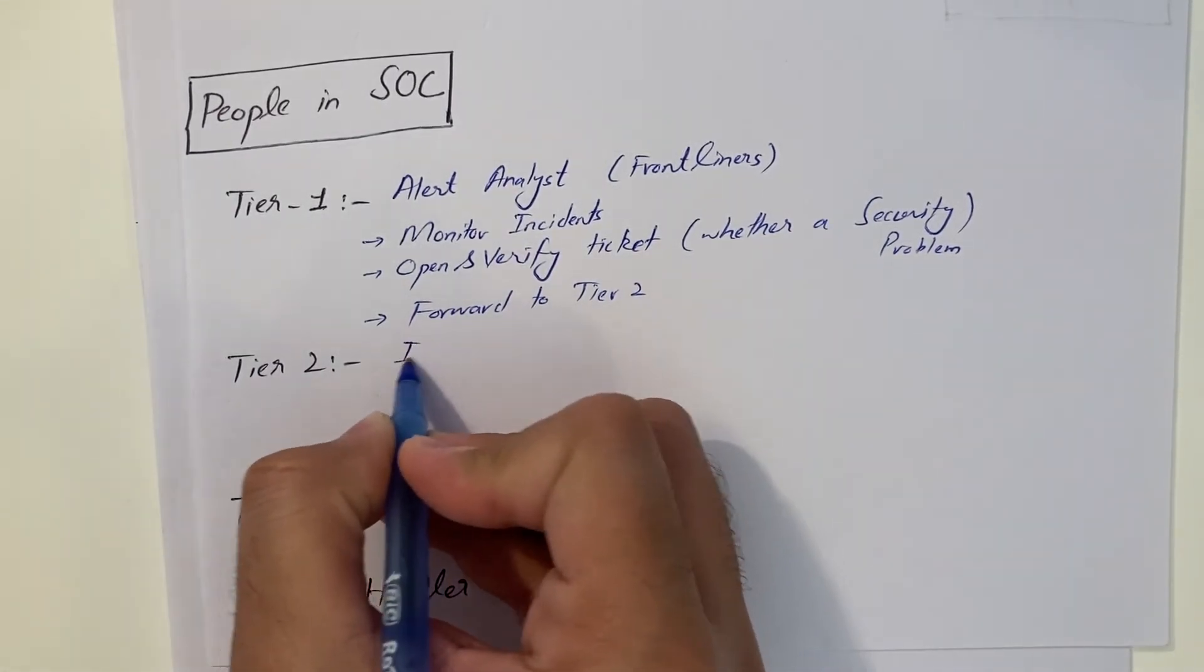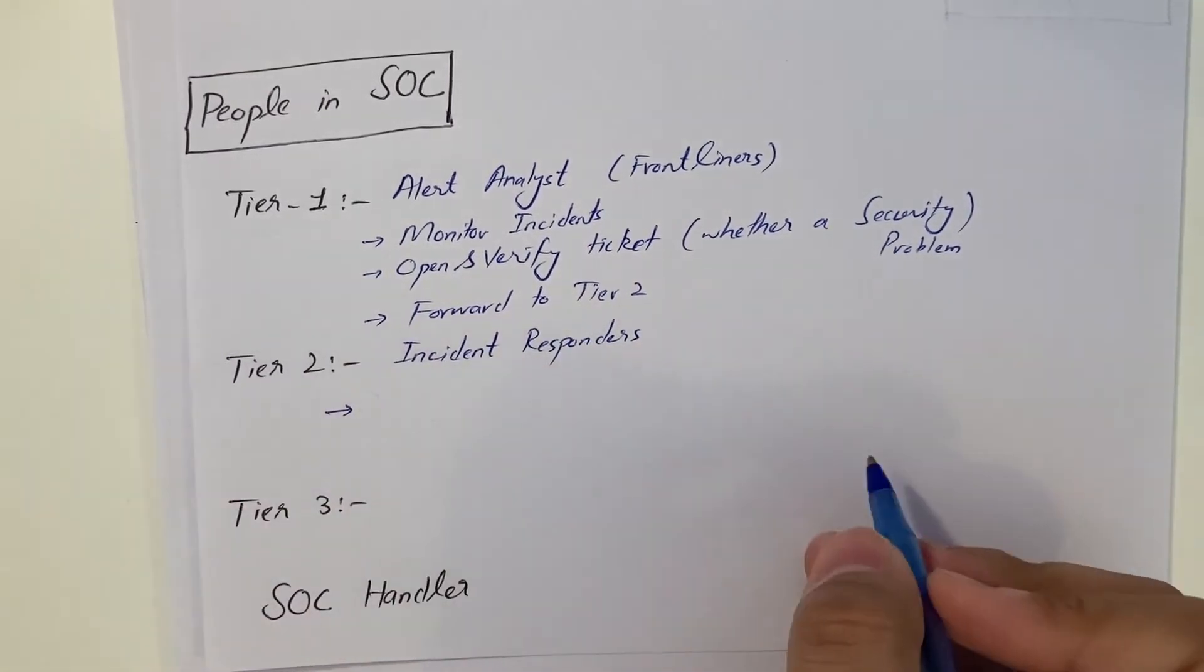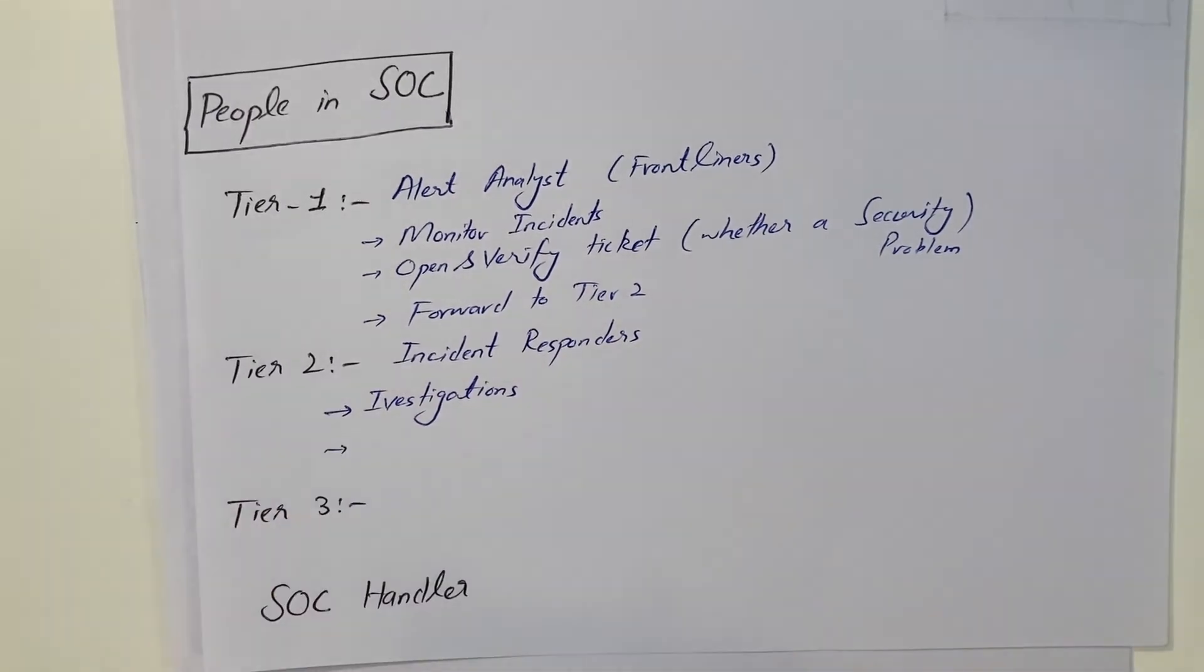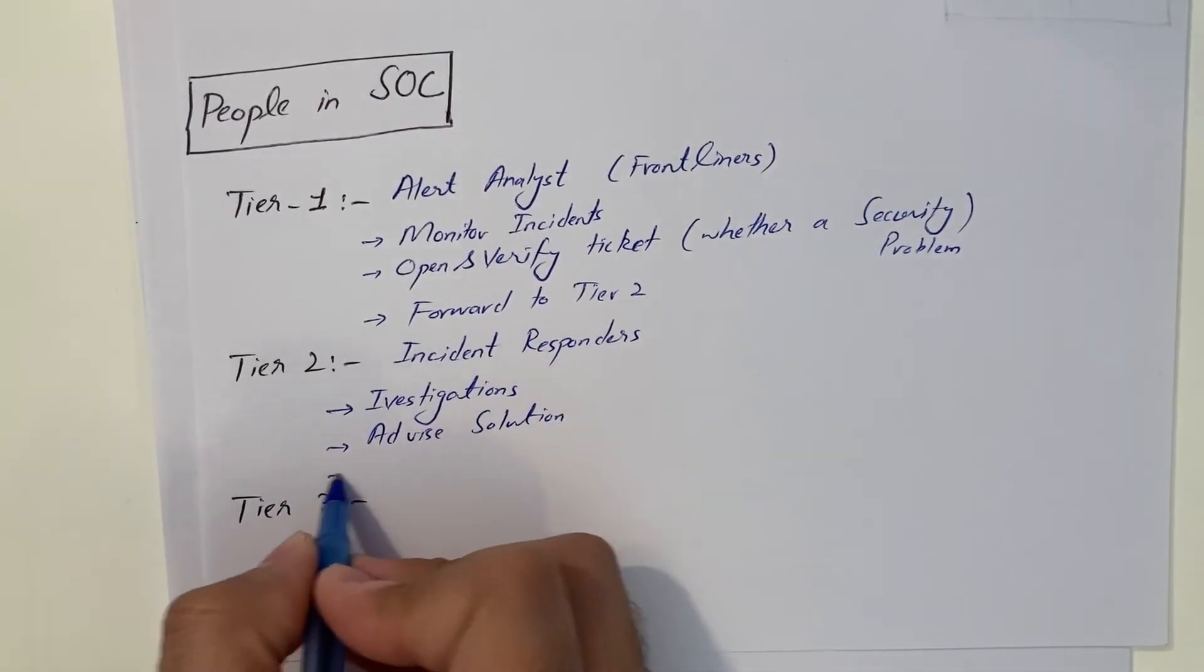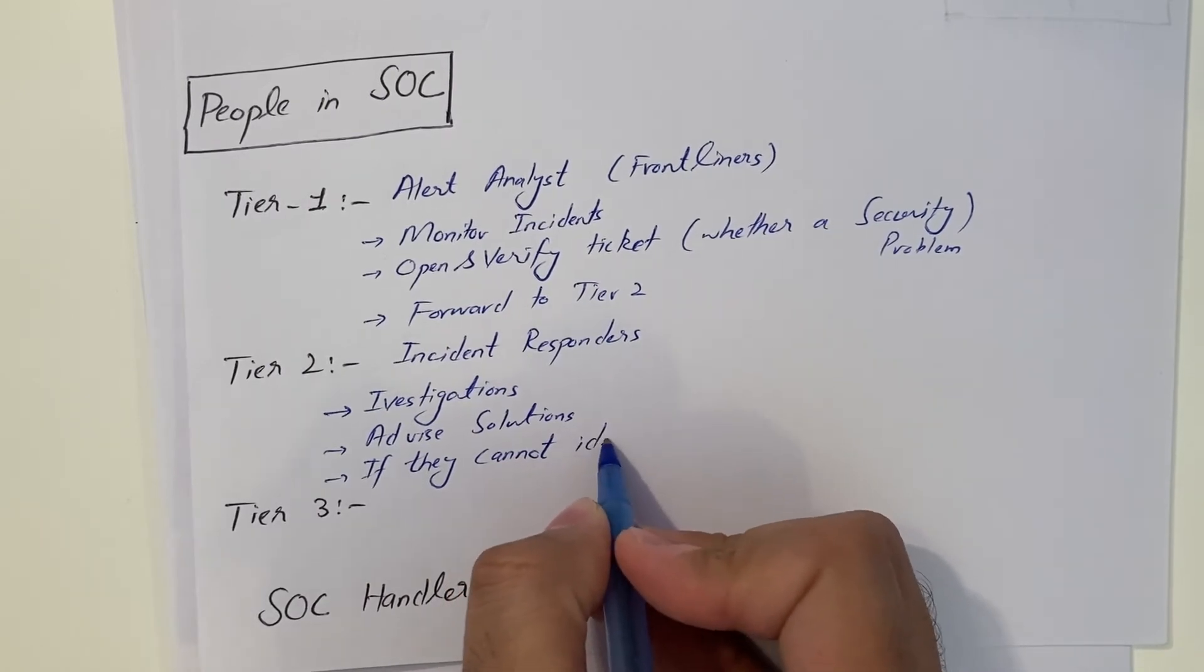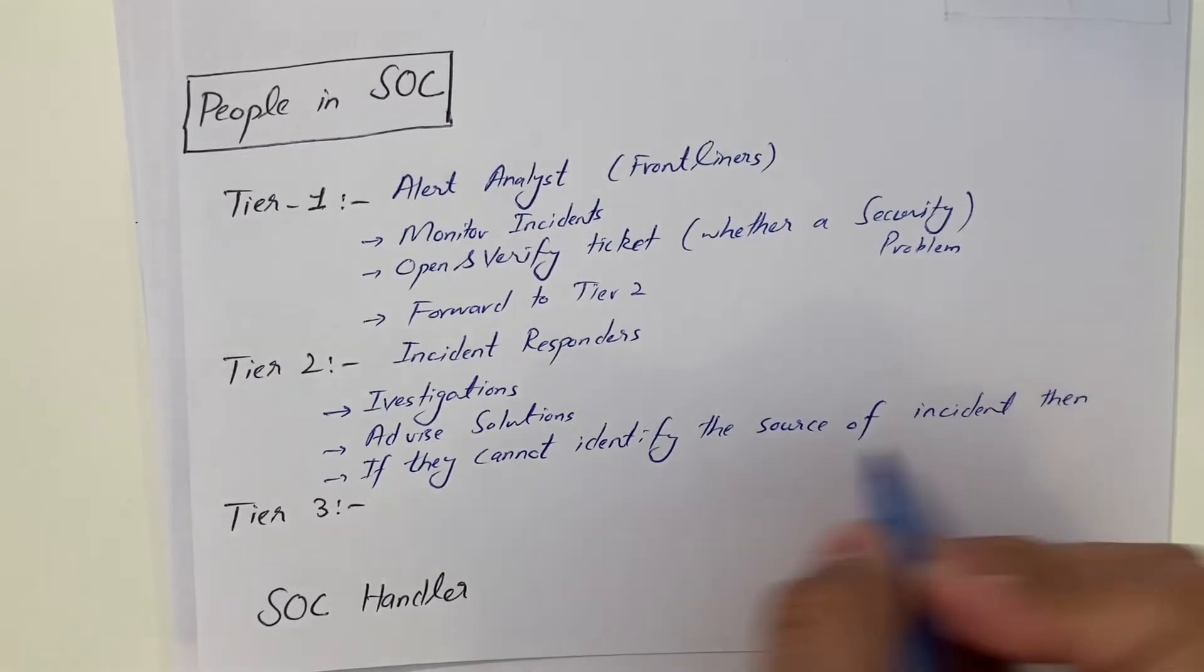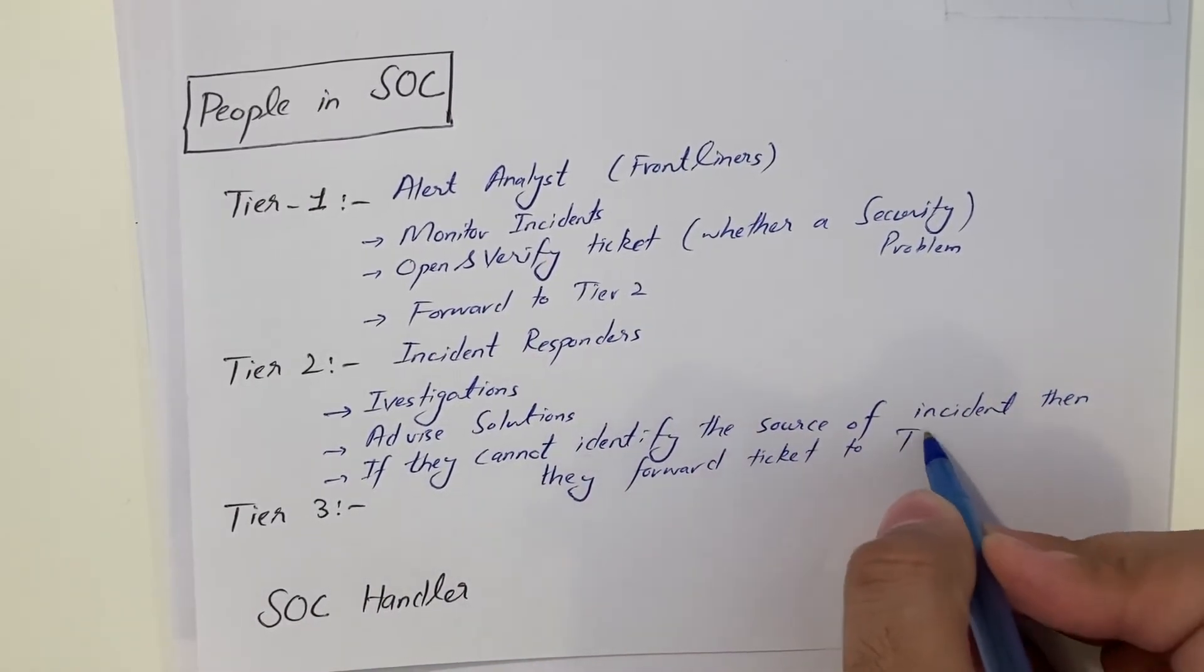Tier 2 is also known as Incident Responders. Incident Responders, they do some deep investigations. Other than that, they advise solutions, remediation solutions. And if they cannot identify the source of incident, then they forward ticket to Tier 3.